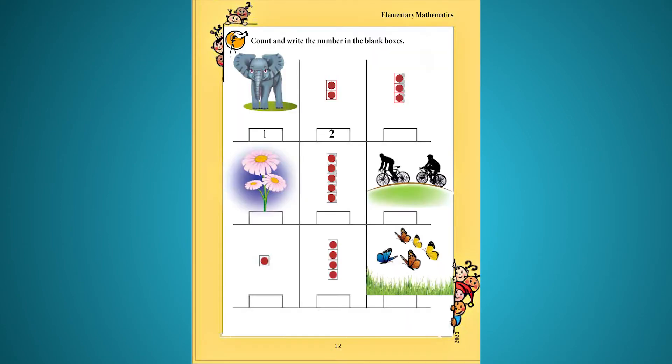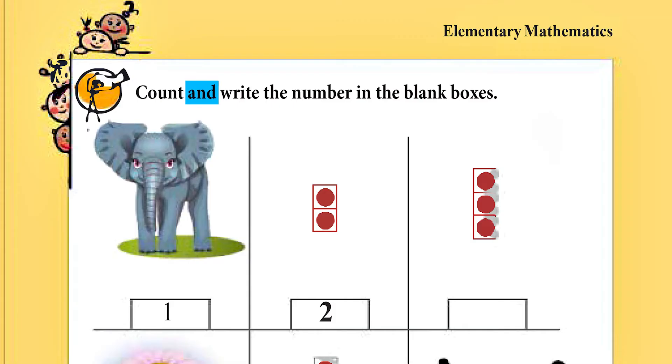Page 12. এবার চলো এই পৃষ্ঠার প্রথম sentence-এ যাই — count and write the number in the blank boxes. এখন যেটা বলা হচ্ছে সেটা হচ্ছে — count অর্থাৎ গণনা করো, and write অর্থাৎ লিখতে হবে। আমাদের গণনা করতে হবে, গুনতে হবে।